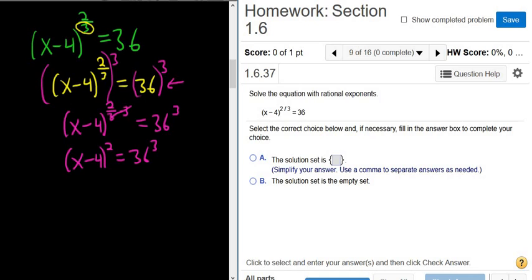Beautiful stuff. So if you had like x to the 7 over 8, you would raise both sides to the 8th power, and then the 8th would cancel. Same thing.